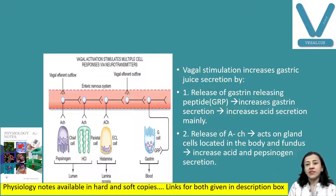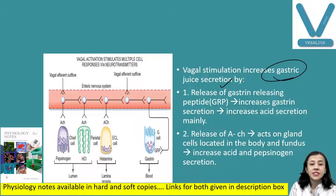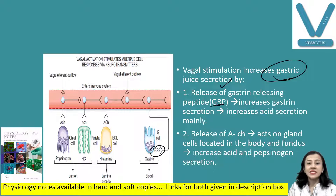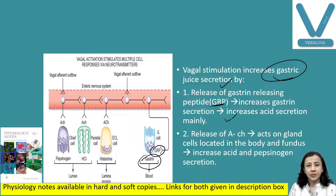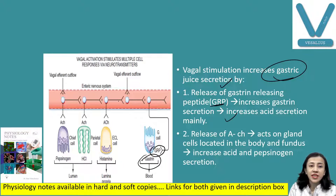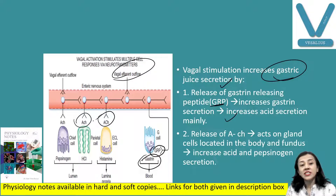When you stimulate the vagus it increases gastric juice secretion by two mechanisms. First, it releases GRP — gastrin releasing peptide — and this gastrin releasing peptide increases the release of gastrin, which in turn increases secretion of gastric juice, mainly acid secretion. Second, acetylcholine released by vagal efferent nerve endings directly acts on the glandular cells.